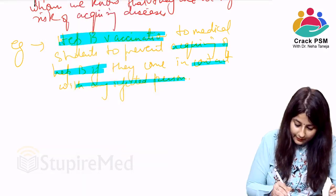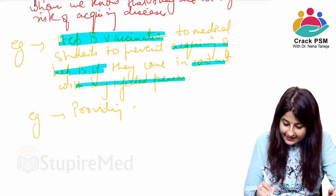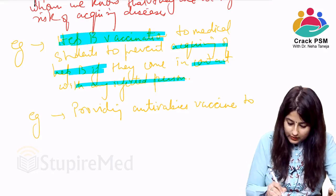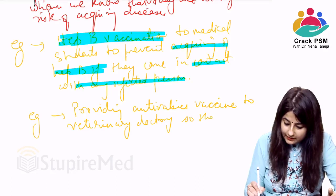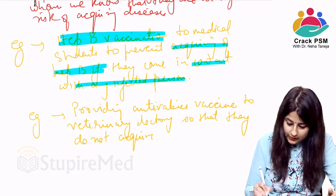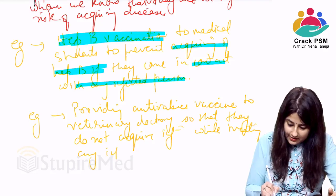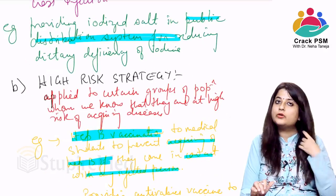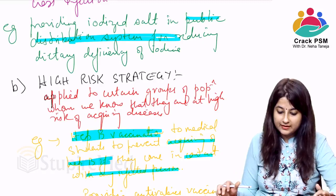Another example of high-risk strategy: giving anti-rabies vaccine to veterinary doctors so they do not acquire rabies infection while treating infected animals. So interventions can be directed to the entire population or to high-risk groups.